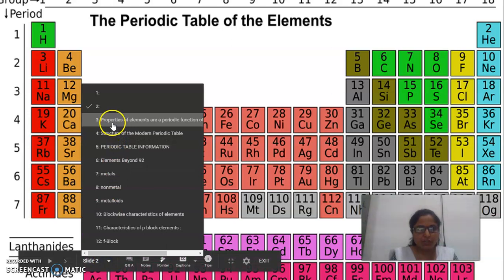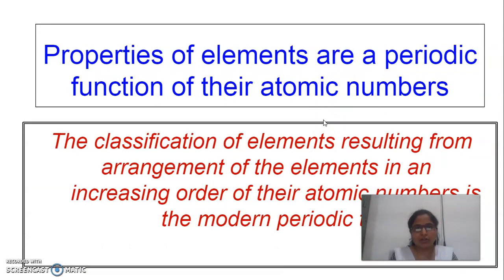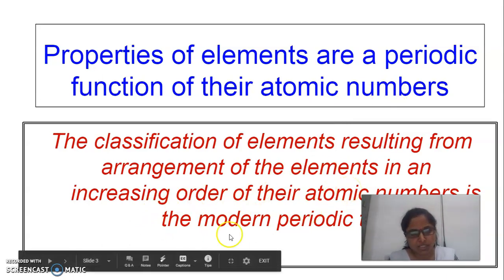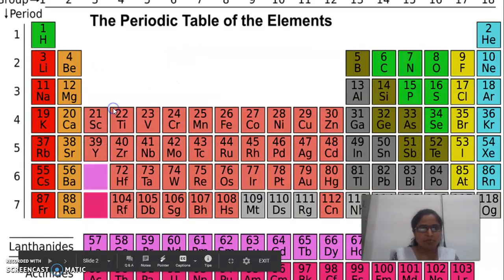The properties of elements are a periodic function of their atomic numbers. As we have seen, the properties of periodic elements are arranged by increasing atomic numbers. The classification of elements arises from the arrangement of elements in increasing order of their atomic numbers — like 1, 2, 3, 4, 5, 6. These are the atomic numbers.